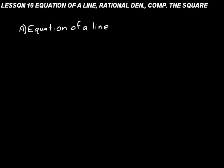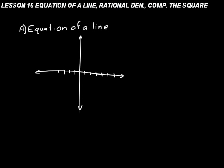A line is just a straight curve. Remember how we can define a line as a series of points all connected together? We can make equations for geometric curves with the aid of a coordinate system — a Cartesian coordinate system. It's just a vertical and a horizontal number line, and we can assume the tick marks are spaced one unit apart.